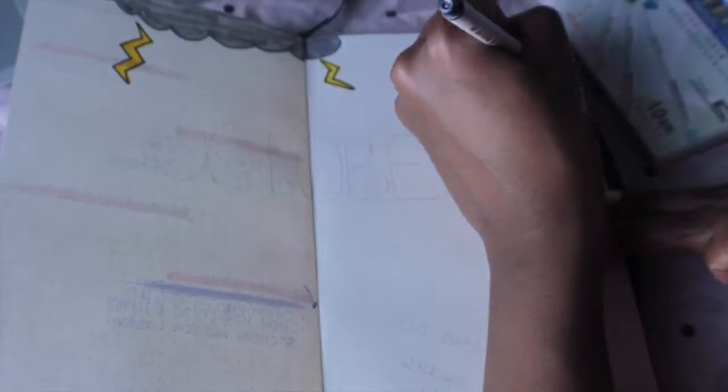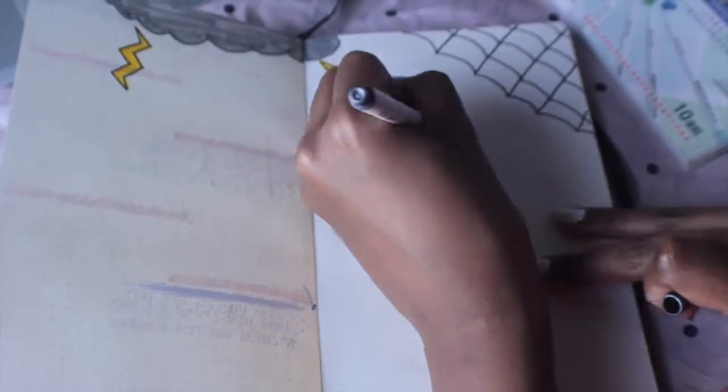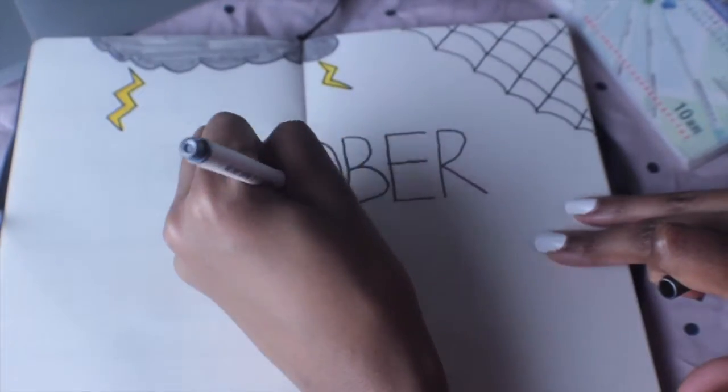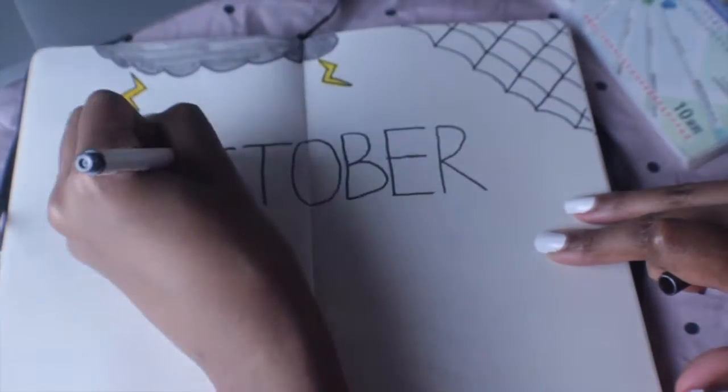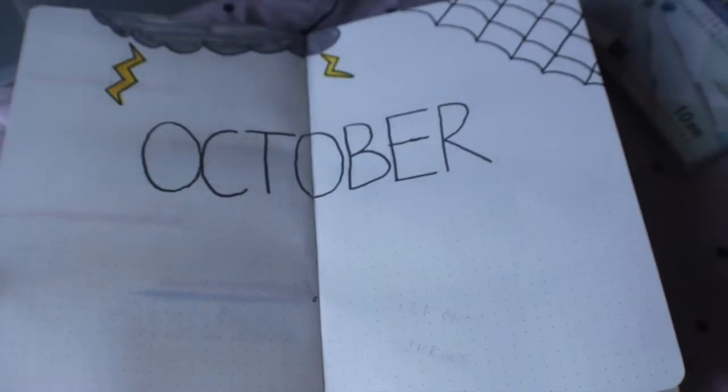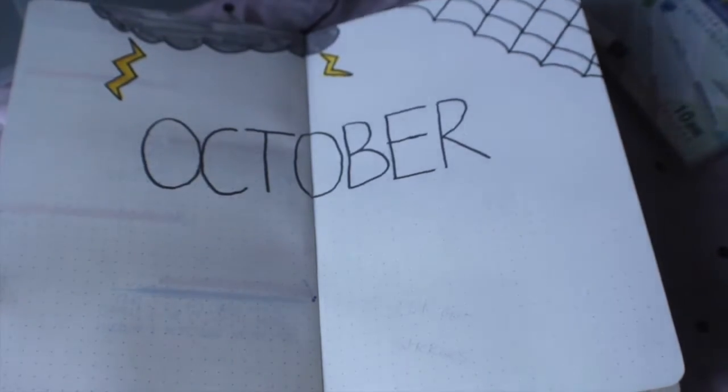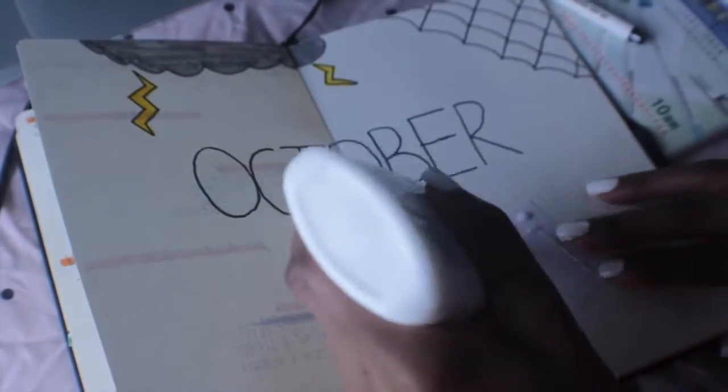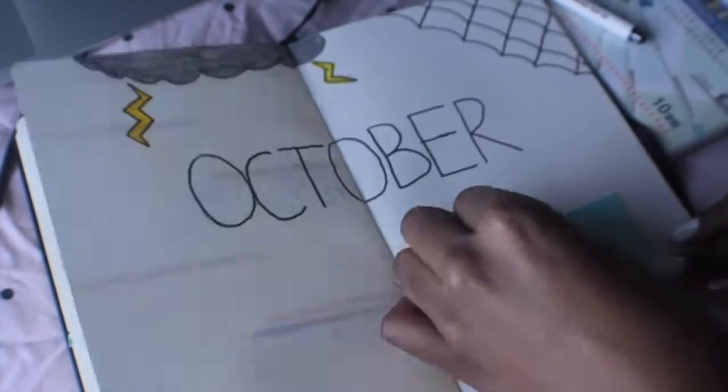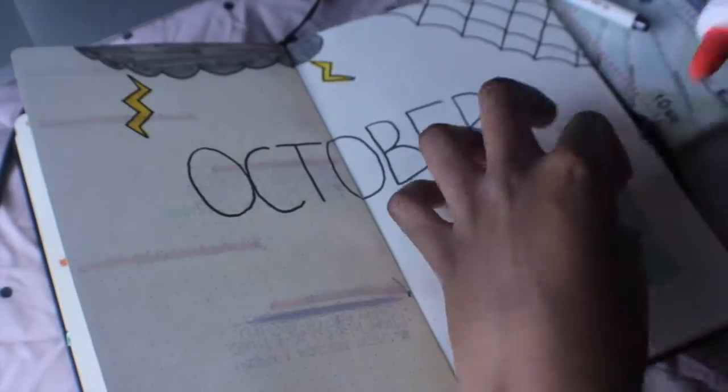You see the spider web up in the corner - that will be a theme throughout this bullet journal setup. Don't worry, there's no spiders, because if you're like me, I don't like spiders. I have a little lightning cloud up at the top, and I'm also gonna build some textures and layers on this.